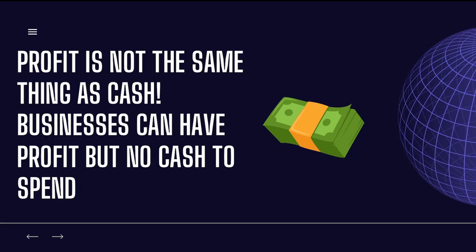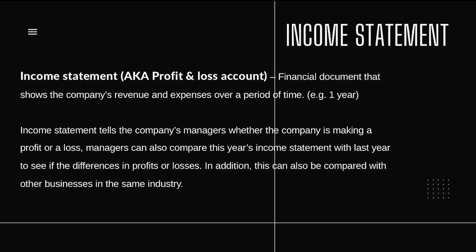You need to remember that profit is not the same thing as cash. Businesses can have profit but no cash to spend. Now let's look at the details of an income statement. An income statement is also known as a profit and loss account. It is a financial document which shows the company's revenue and its expenses over a period of time, which is normally one year.